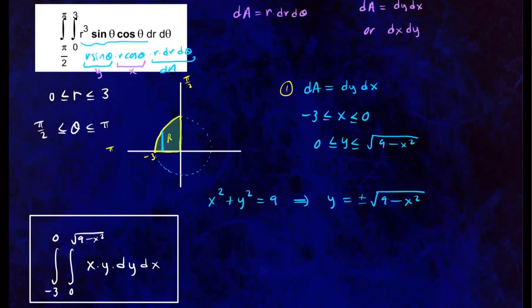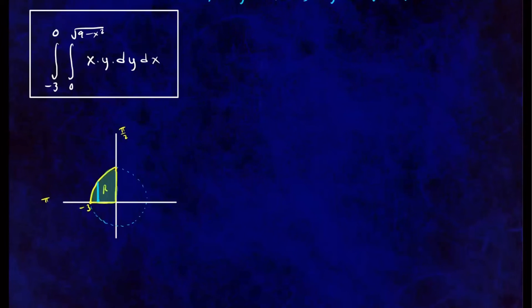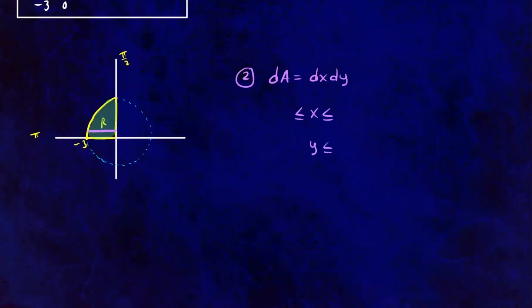The second way to write it is to reverse the order of integration. Instead of vertical cross-sections, we look at horizontal cross-sections. So dA is going to be dx dy, and we need to find new bounds for x and new bounds for y.